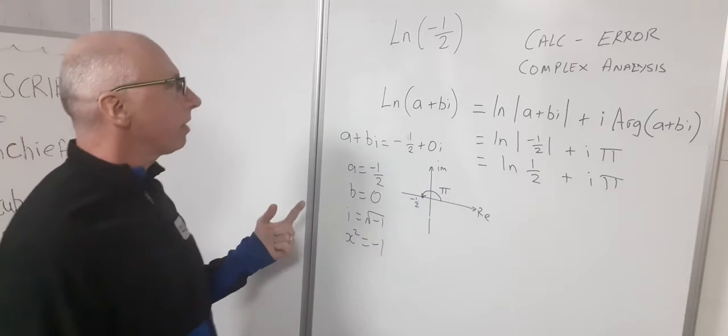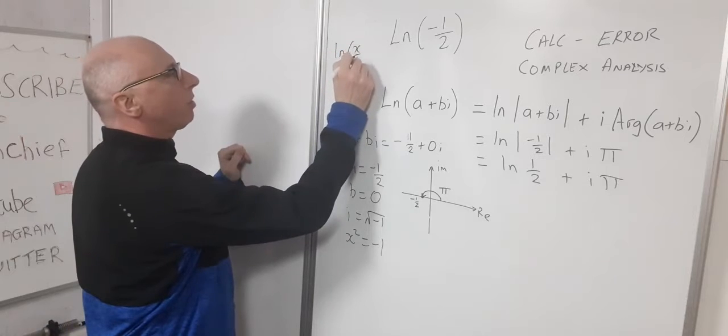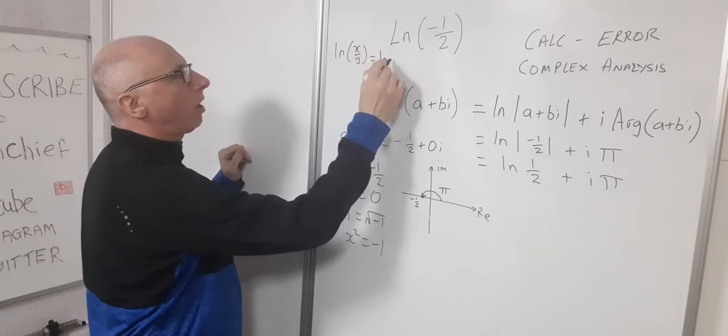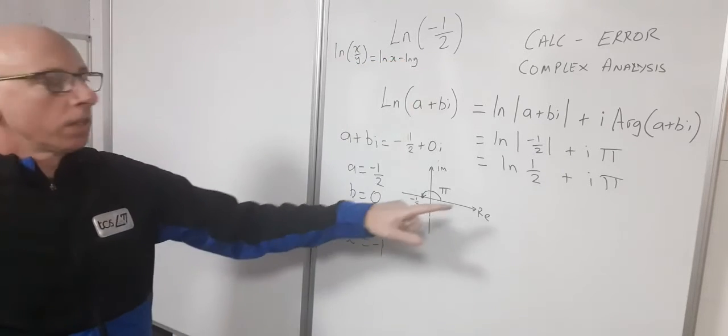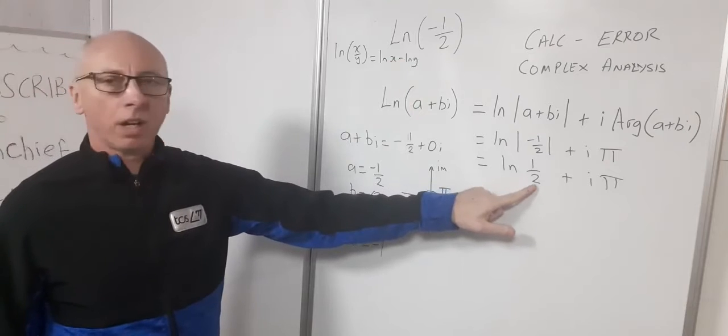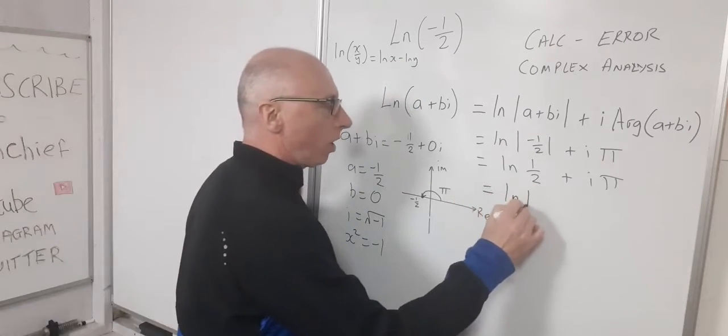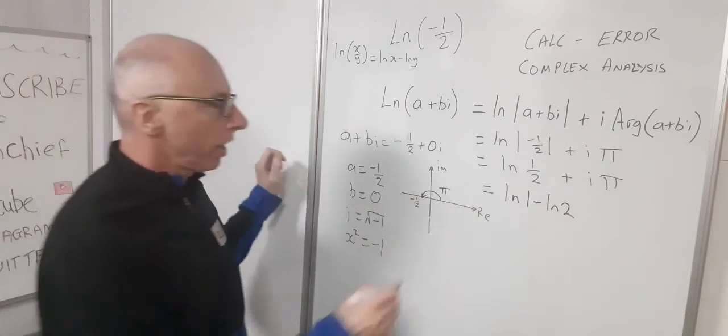And the log of one-half, we could rewrite this. There's our log identity. The log of x over y equals the log of x minus the log of y. So here we've got log of one-half. Using this, we can write log of one minus log of two.